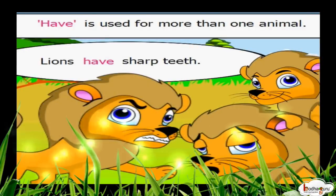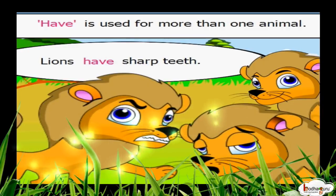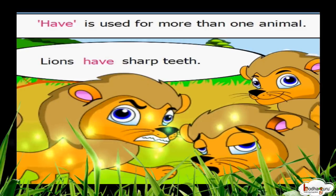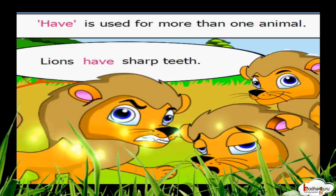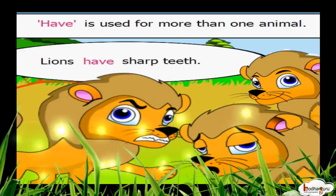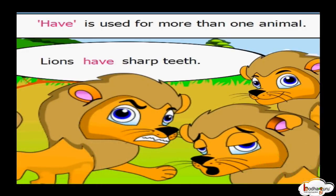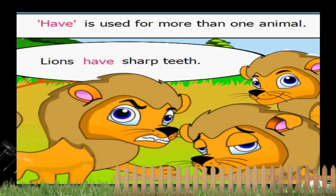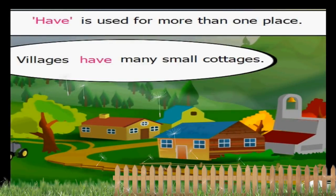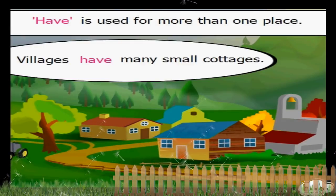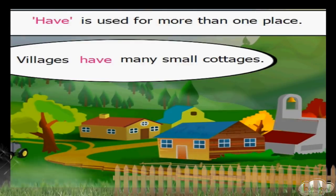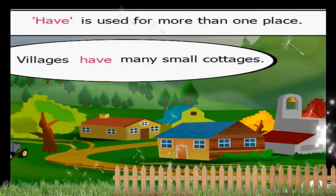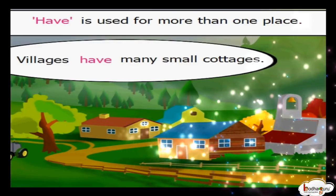Lions have sharp teeth. 'Lions' is a plural form — more than one lion — so we say 'lions have'. Giraffes have long necks. We are talking about more than one giraffe. Villages have many small cottages. 'Villages' is a plural form, that is more than one village, so we use 'have' after it. If it was 'village', we would use 'has' instead of 'have'.